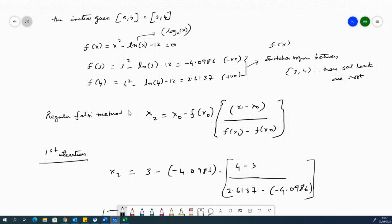So it says that the regular falsi method, the formula for regular falsi method is x2 equals to x naught minus f of x naught multiplied by x1 minus x naught divided by f of x1 minus f of x naught.